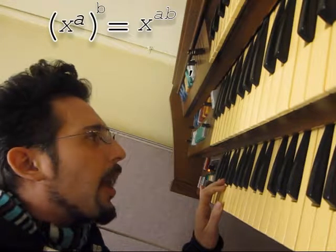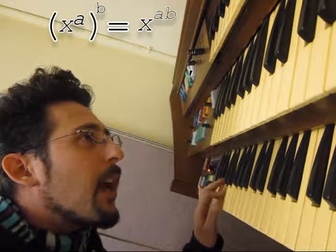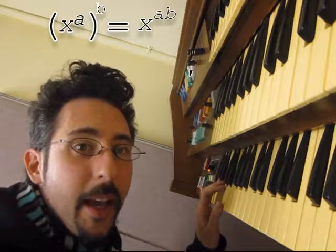And x to the a all to the b is x to the a times b.